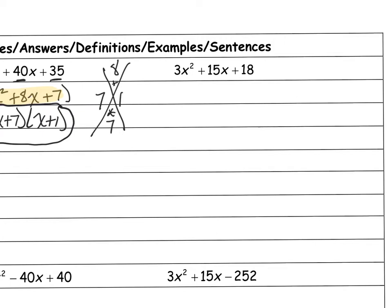So what goes into 3, 15, and 18? Well 3 does. So if I take a 3 out, I get x squared plus 5x plus 6. And then I have a trinomial in here, so I'm going to just factor this like I've been doing.